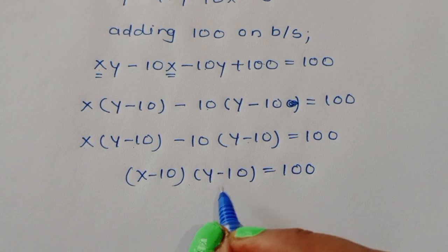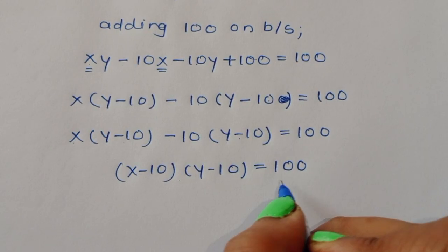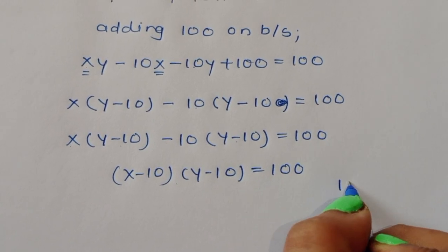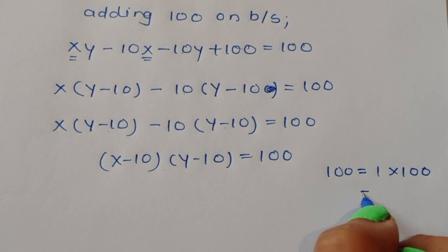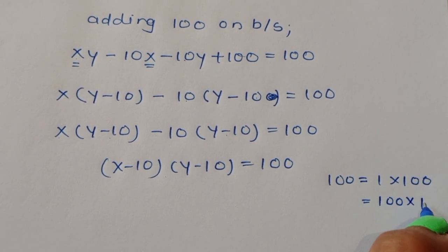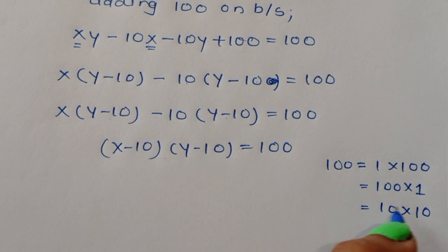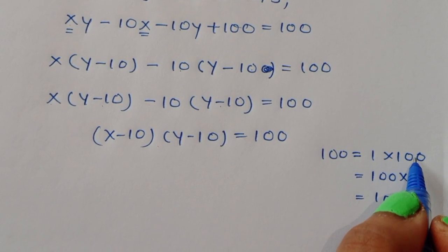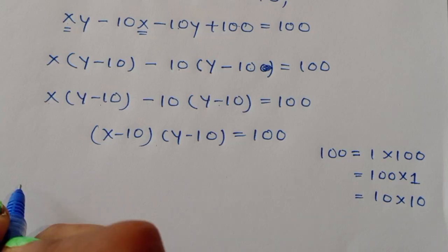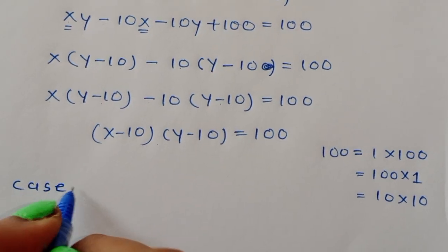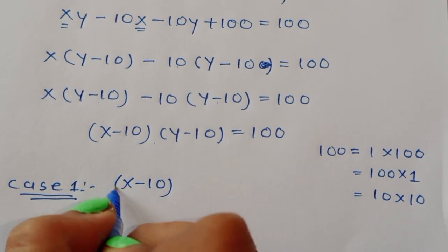Now we find the factor pairs of 100: 1 times 100, 100 times 1, and 10 times 10. This gives us three cases to consider.